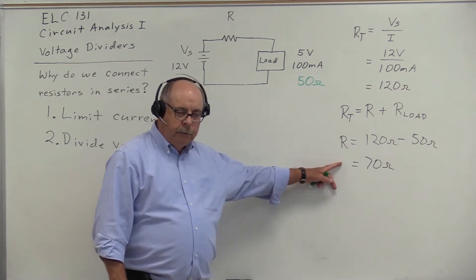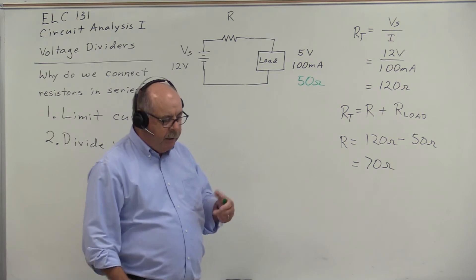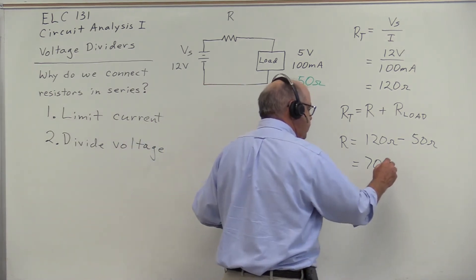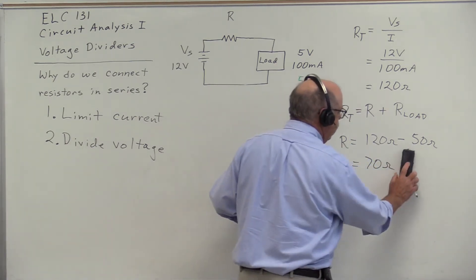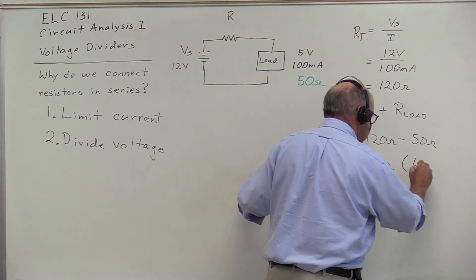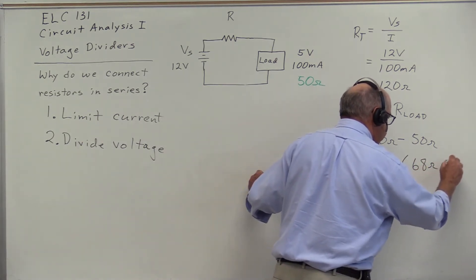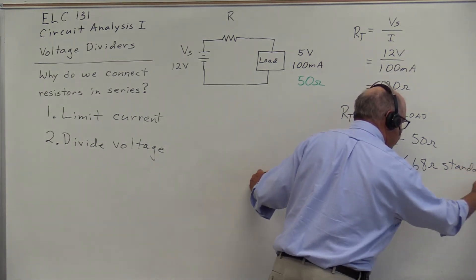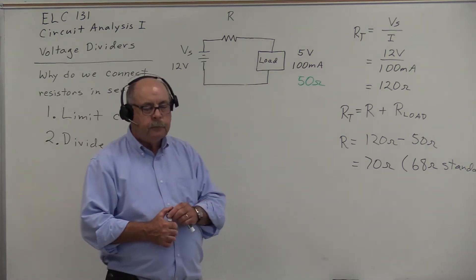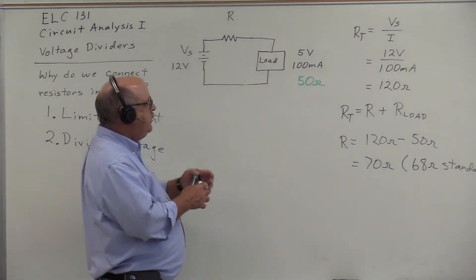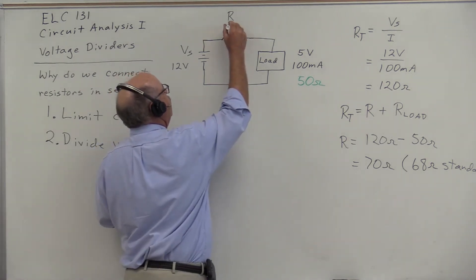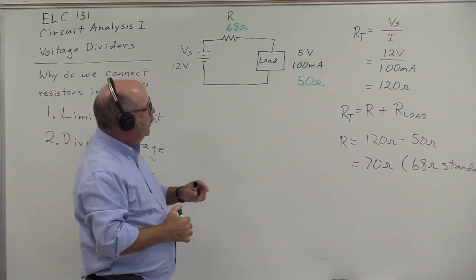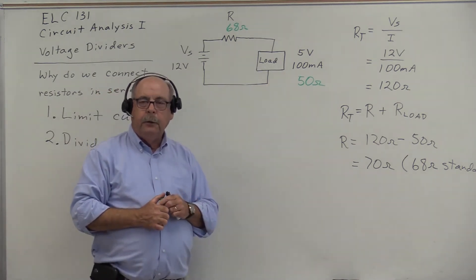When we're selecting resistors, we cannot purchase a 70 ohm resistor. Standard value resistors would be either 68 ohm or 75 ohm. A 68 ohm resistor will be our closest standard value. By placing a 68 ohm resistor here, we will limit the current to approximately 100 milliamps.